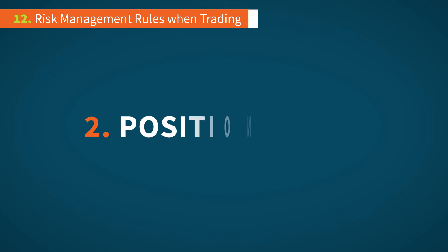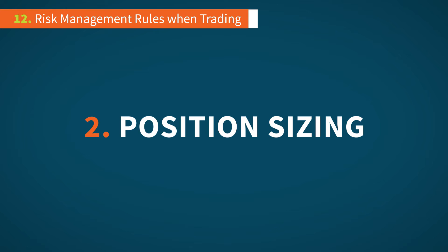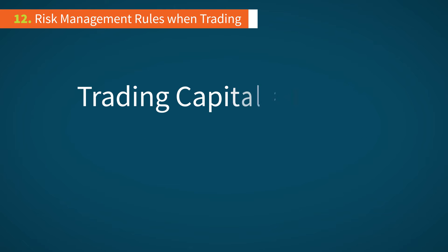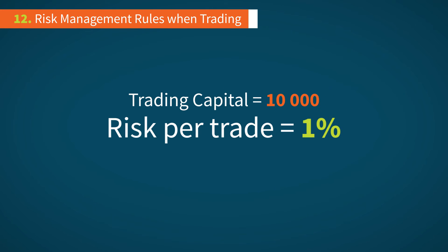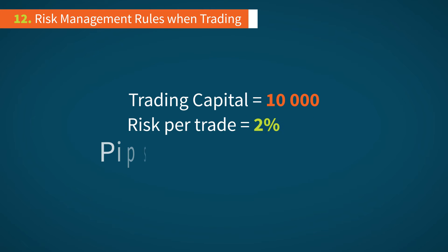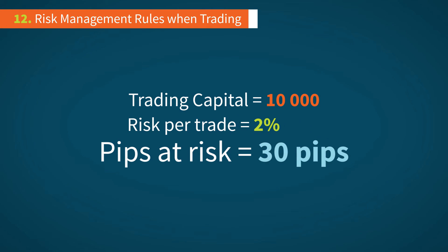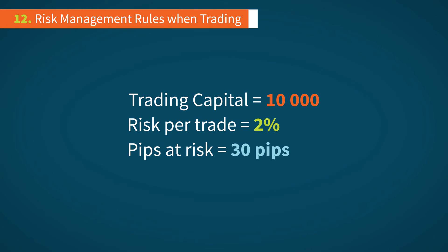The second rule is position sizing, or how big your order is going to be — will it be 1 lot or 0.01 lots? An important parameter for position sizing is figuring out what your risk per trade is going to be: 1%, 2%, or higher. Once you've done that, you can specify the number of pips at risk — that is, the difference in pips between the entry price and the stop loss. Now you calculate your position size like so.